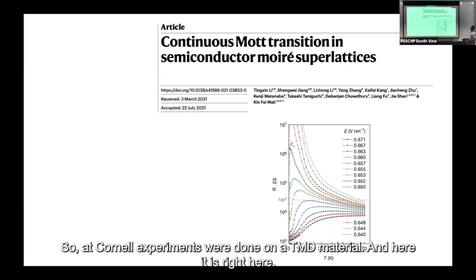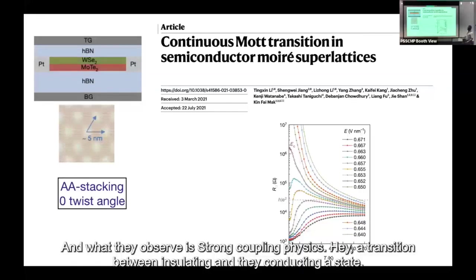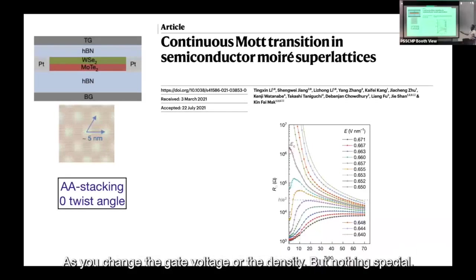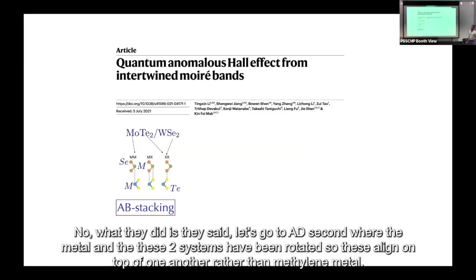At Cornell, experiments were done on AA-stacked TMD material. They observed strong-coupling physics — a transition between an insulating and a conducting state as you change gate voltage or density — but nothing topologically special. Then they went to AB stacking, where the metal and chalcogenide layers are rotated so they align on top of one another rather than metal-to-metal. This is a moiré pattern.